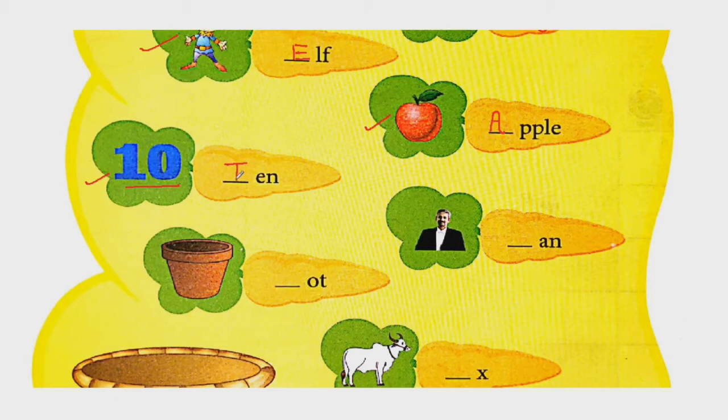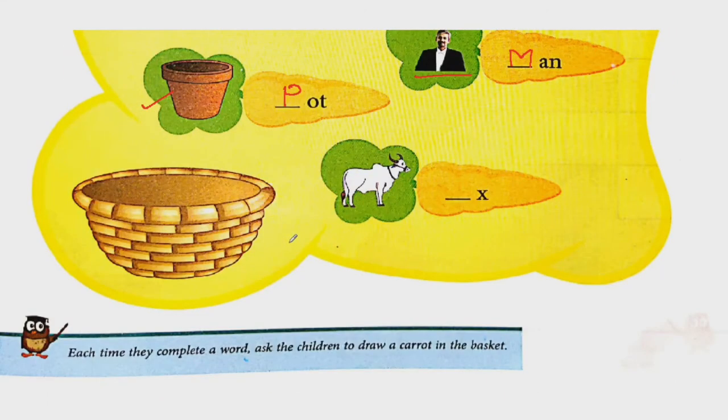Who is this? This is a person, a man. So M-A-N, man. M is consonant. What is this? This is a pot in which you do planting. So P-O-T, pot. P is consonant. And last picture, this is ox. O is vowel. Now the bunny will reach this basket to fill it up. So students, I hope you have understood this question.